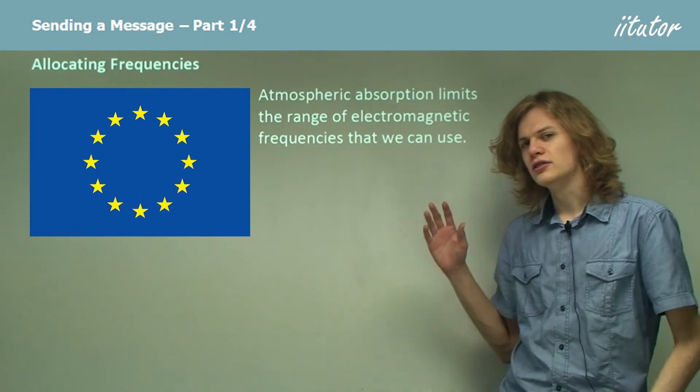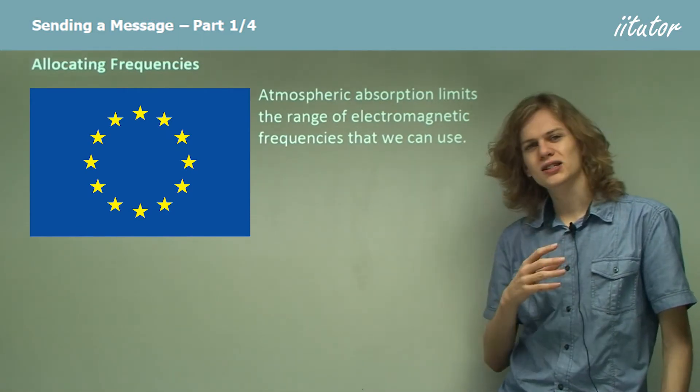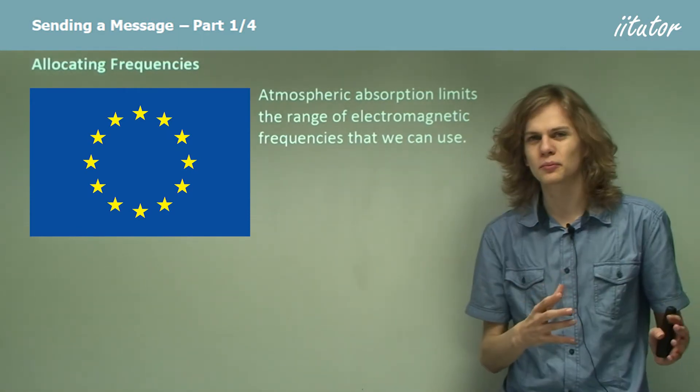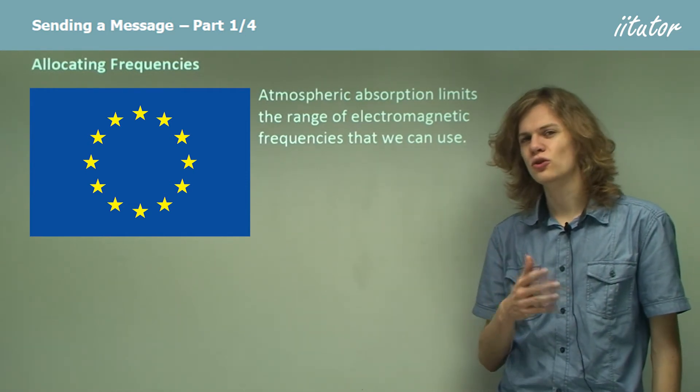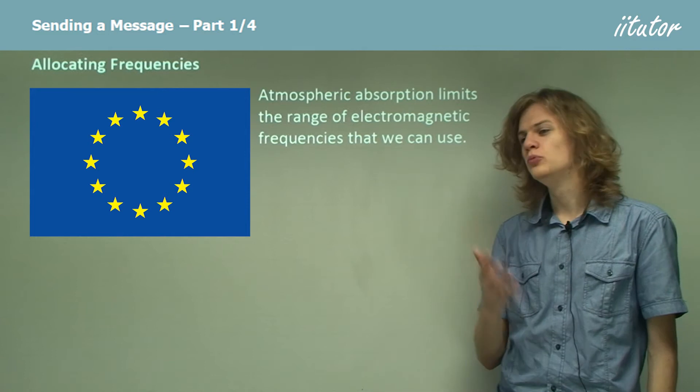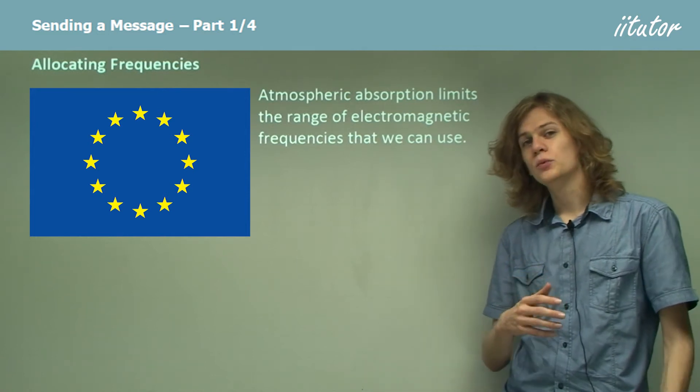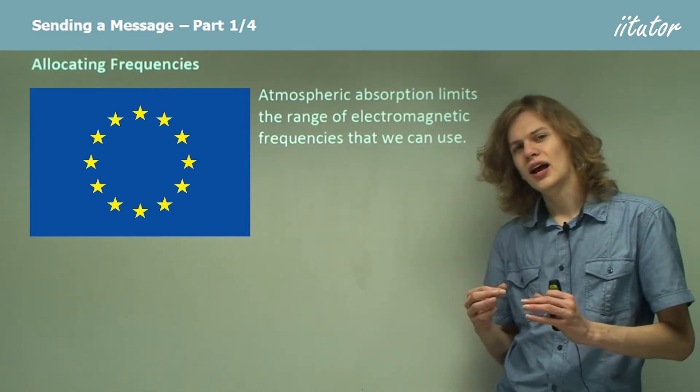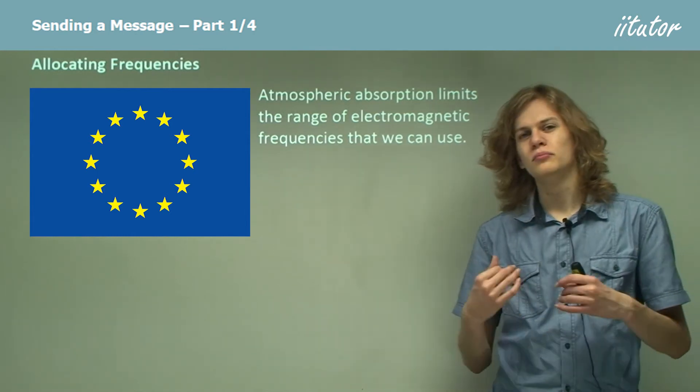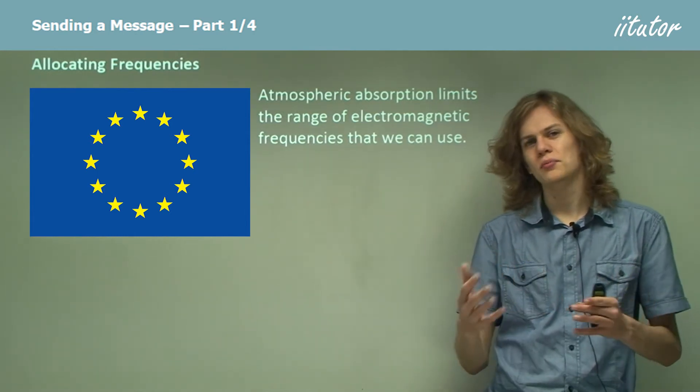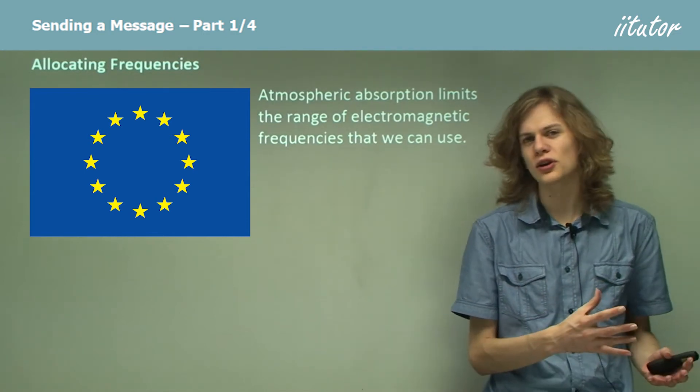Now atmospheric absorption means that we can't actually use the entire spectrum to send messages. We can't use for example x-rays or gamma rays because these will be absorbed by the atmosphere. And we can't use the same wavelength as the radio waves that reach Earth from the Sun because these will become all garbled and scrambled when they become mixed with the Sun's radio transmissions.